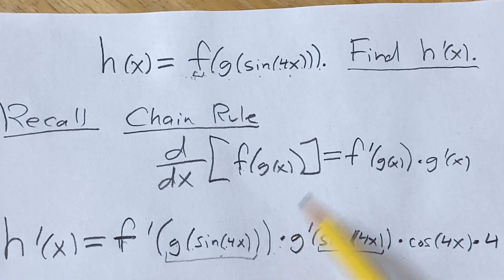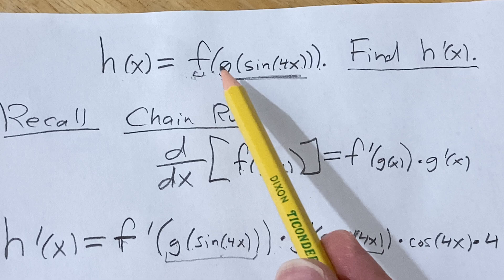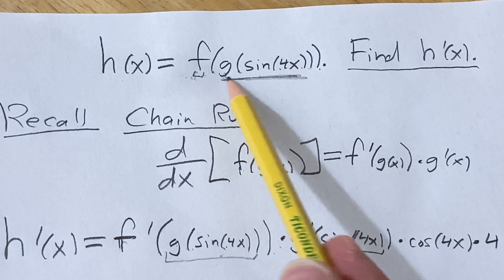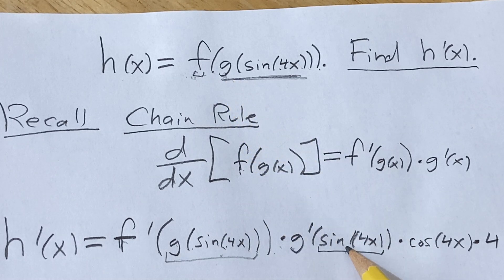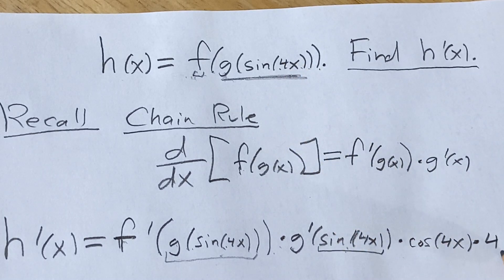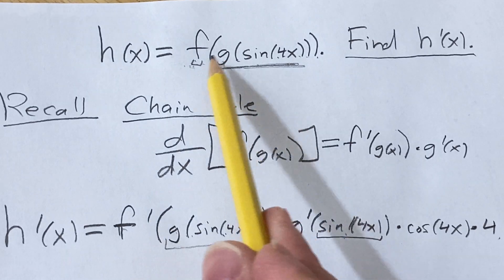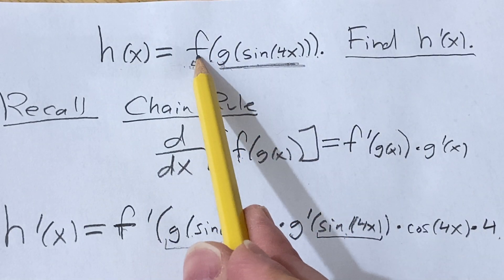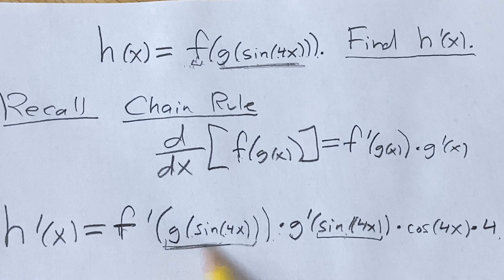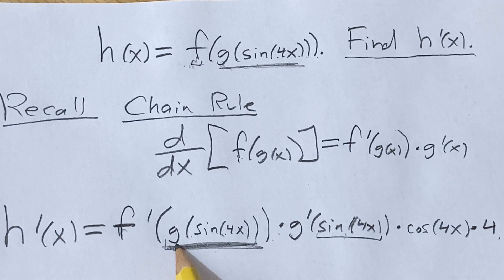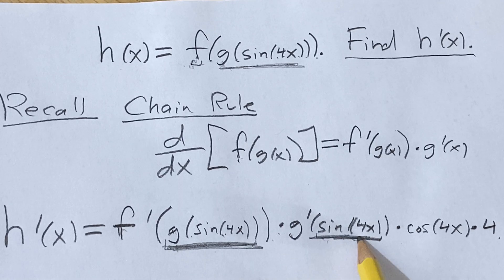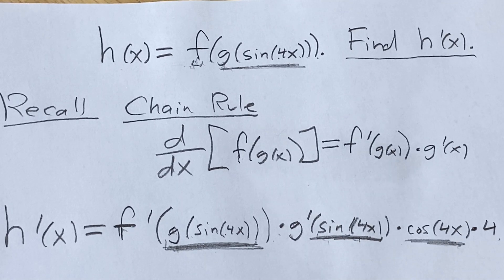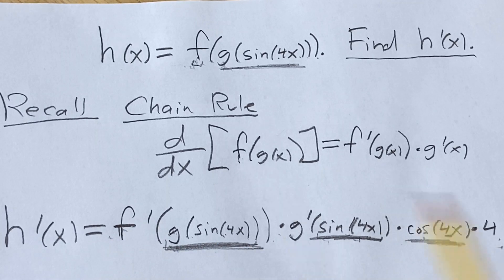...untouched, times the derivative of this piece here. While g is your outside function, you take the derivative of g, leave the inside untouched, and take the derivative of sine, leave the inside untouched, and so on. So basically you look here, take the derivative of the outside, leave the inside untouched, then times the derivative of this — again another outside function — then times the derivative of this, and then times the derivative of 4x. It's like you keep going inside, inside, inside until you finish the process.